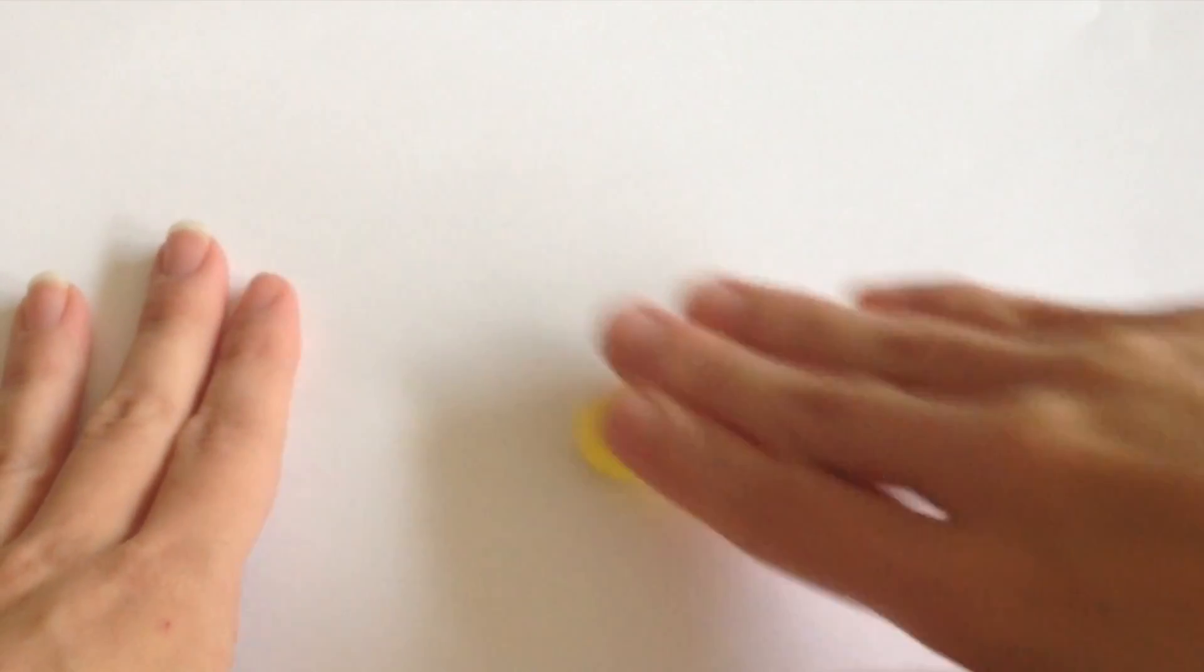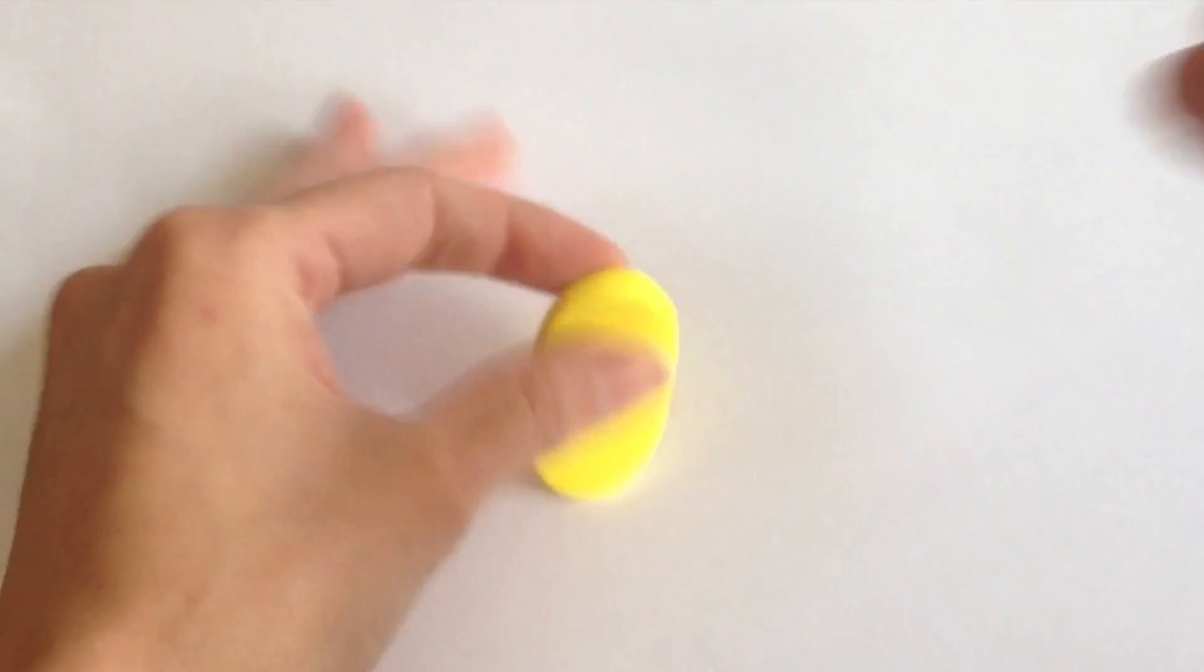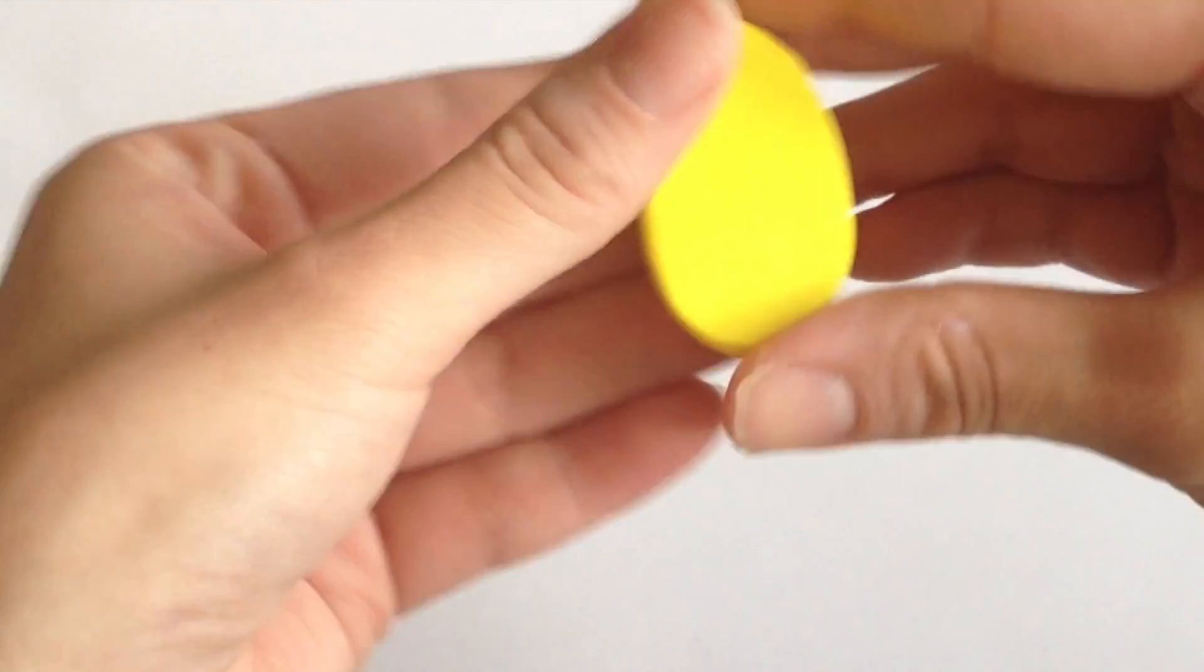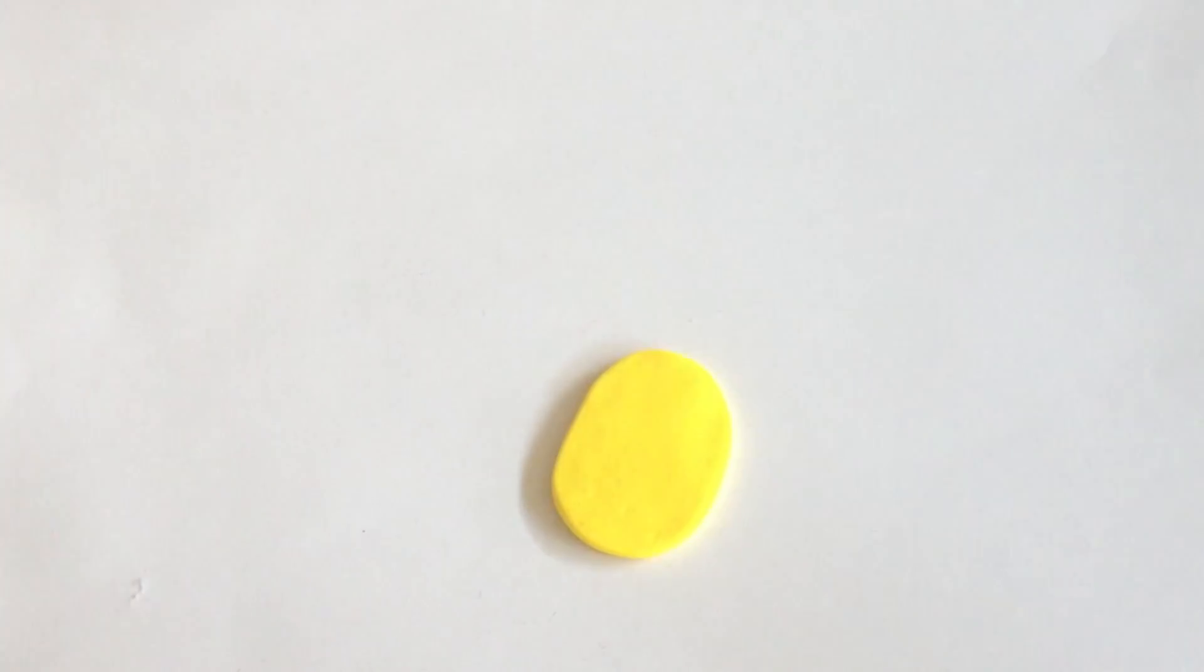I am using yellow polymer clay to form the base of the coin but it really doesn't matter what color you use because I'm going to paint over it later. I shaped this into a nice little oval and baked it into the oven at 250 degrees Fahrenheit for about 20 minutes until it's nice and solid.